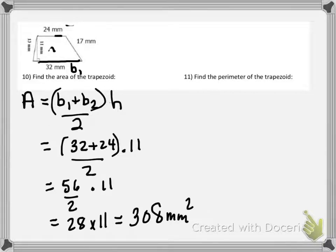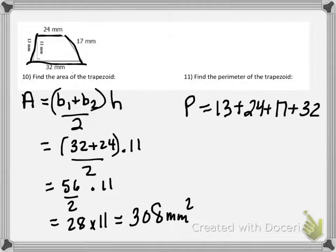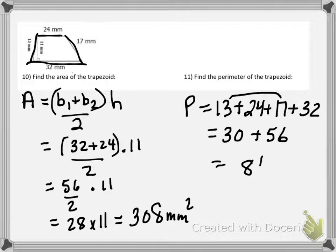Now we're on to number 11, finding the perimeter. We need to add up all of the sides. Starting with 13 and moving clockwise: 13, then 24, then 17, and last is 32. Grouping: 13 plus 17 is 30, and 24 plus 32 is 56, and adding those together gives us 86 millimeters. So the perimeter is 86 millimeters.